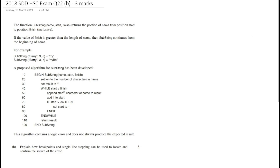In this video we are going to look at the second part of question 22 from the 2018 Software Design and Development HSC exam. In the previous video we looked at part a, where we had to do a desk check on the algorithm and found that the result was an infinite loop. In this part, part b, we need to explain how breakpoints and single line stepping can be used to locate and confirm the source of the error.